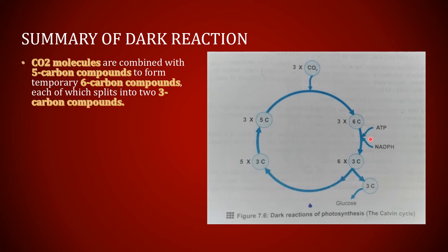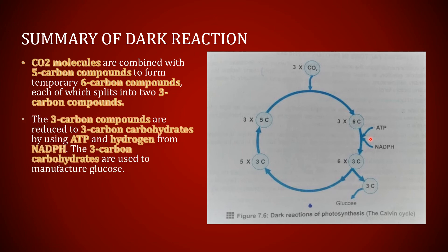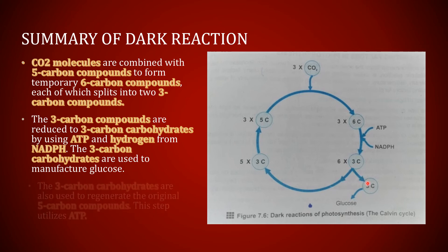After joining ATP and NADPH, the second function: the three six-carbon atoms are reduced to three carbon. After using ATP and NADPH in this process, the six carbon becomes three carbon. One atom of three carbon is separated for making glucose.